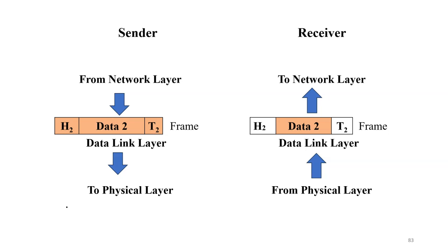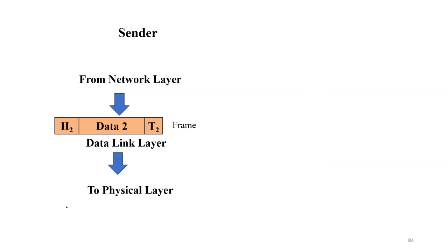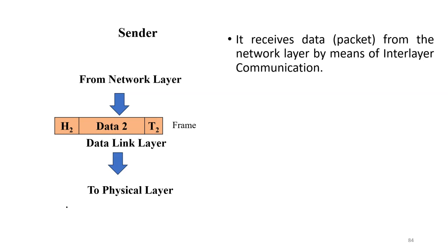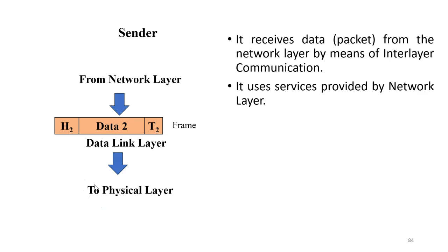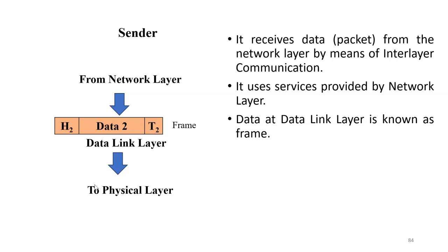At the sender side, the data link layer receives data from the network layer by means of interlayer communication. Data in the network layer is known as a packet. The data link layer uses the services provided by the network layer, which is the upper layer, and data at the data link layer is known as a frame. Data in the network layer is a packet; data in the data link layer is a frame.